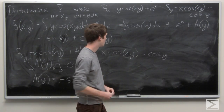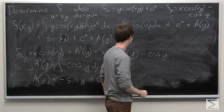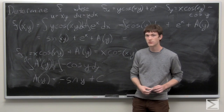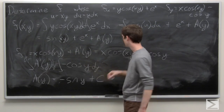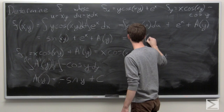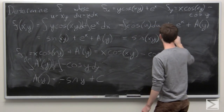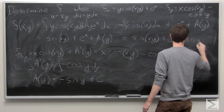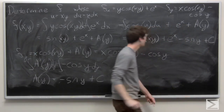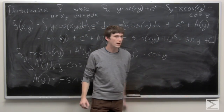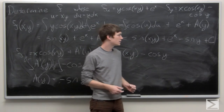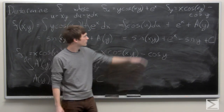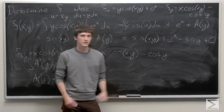We can now plug this new information into our previous solution for f(x, y). So we have f(x, y) equals sine of xy plus e to the x minus sine of y plus C. And that is our function f(x, y) whose partial derivatives are given to us as stated.